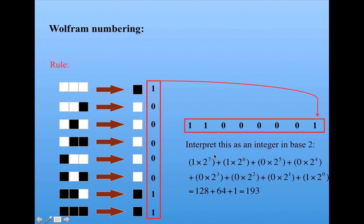Now I interpret this as an integer in base 2. So this is 1 times 2 to the 7th, plus 1 times 2 to the 6th, plus 0 times everything else, plus 1 times 2 to the 0, which is just 1. So we get 128 plus 64 plus 1 equals 193. So this would be rule 193.